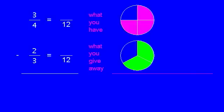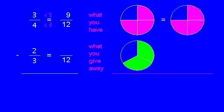So now we have to convert each fraction. To go from a whole of four pieces to a whole of 12 pieces, the multiple is three. So three times three is nine. To go from a whole of three pieces to a whole of 12 pieces, the multiple is four. Four times two is eight.